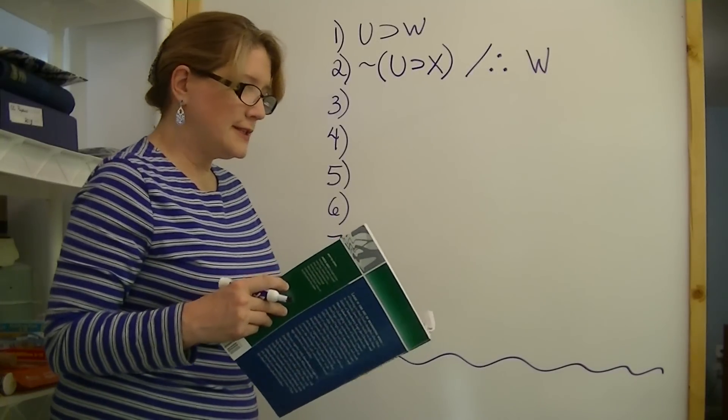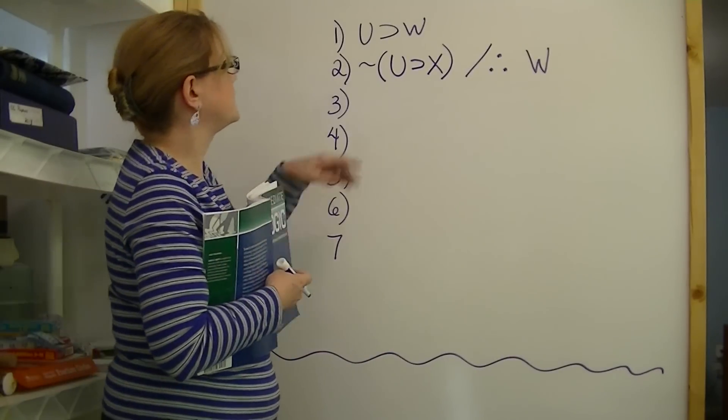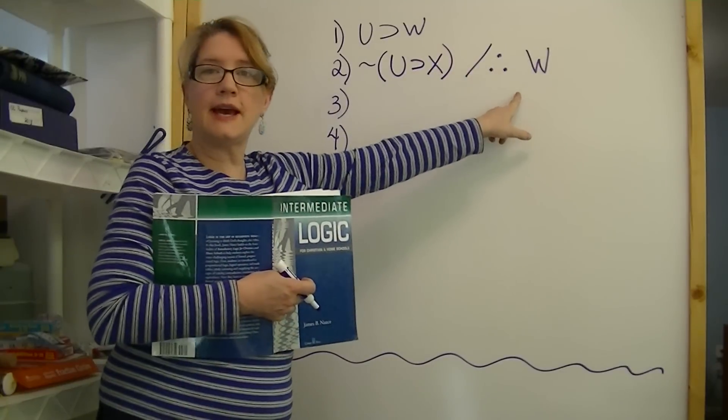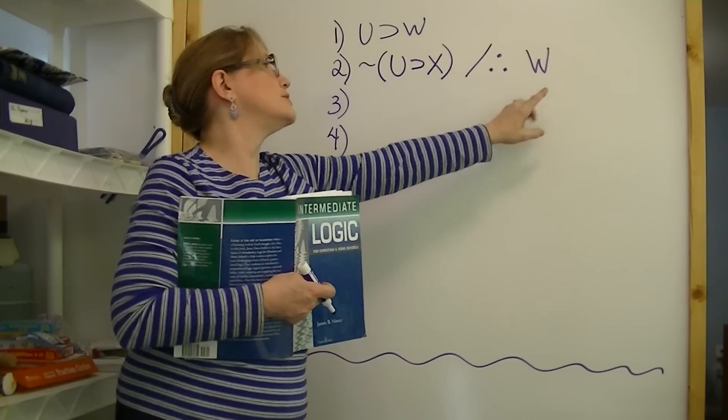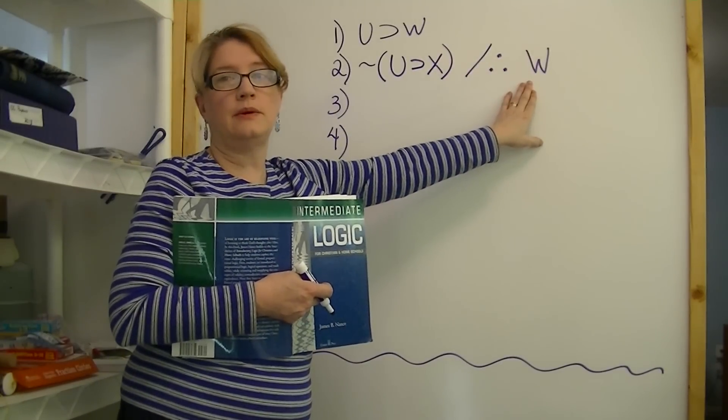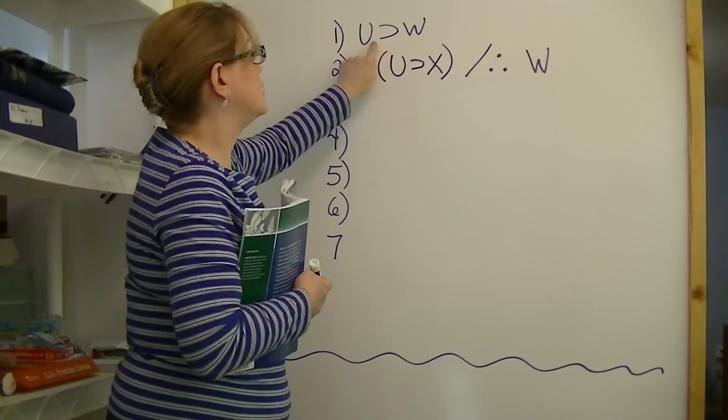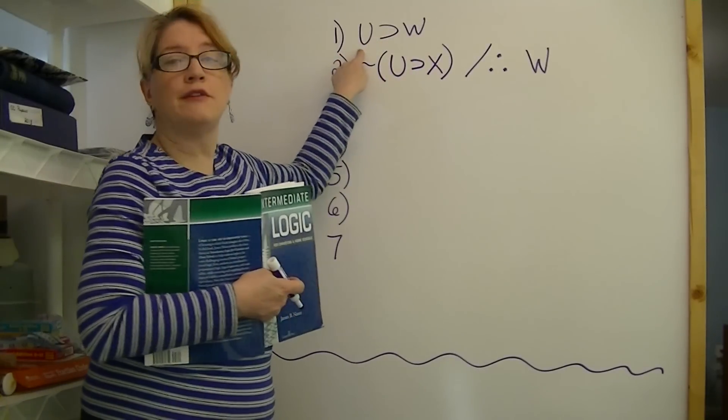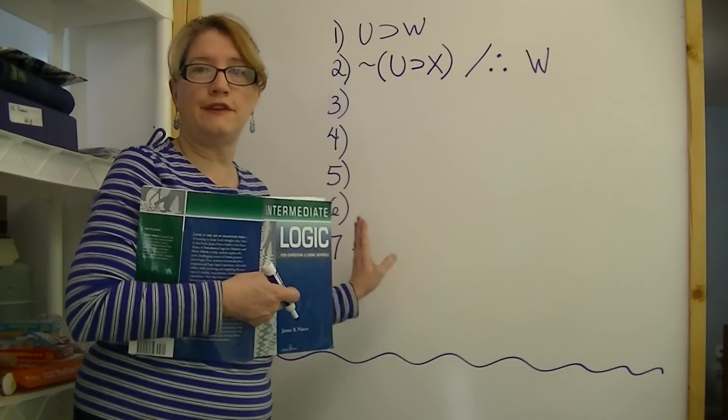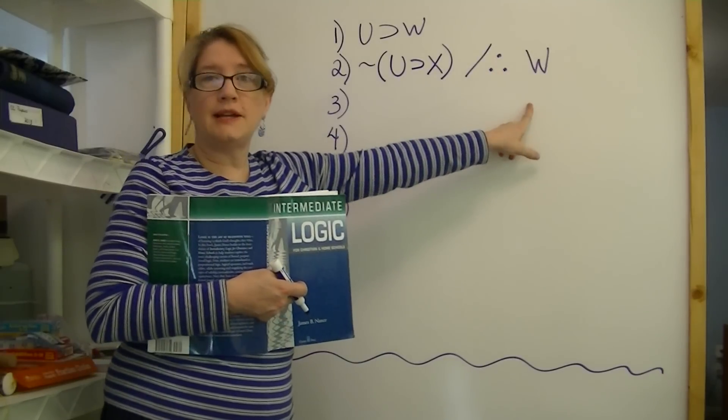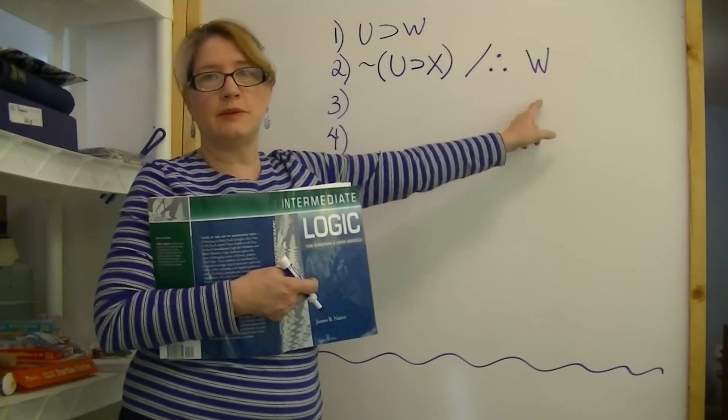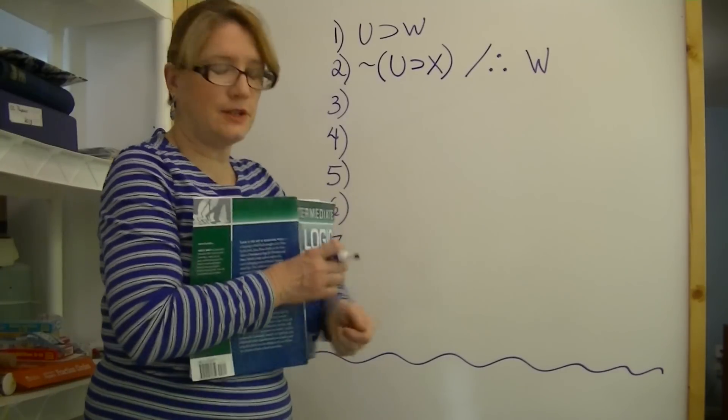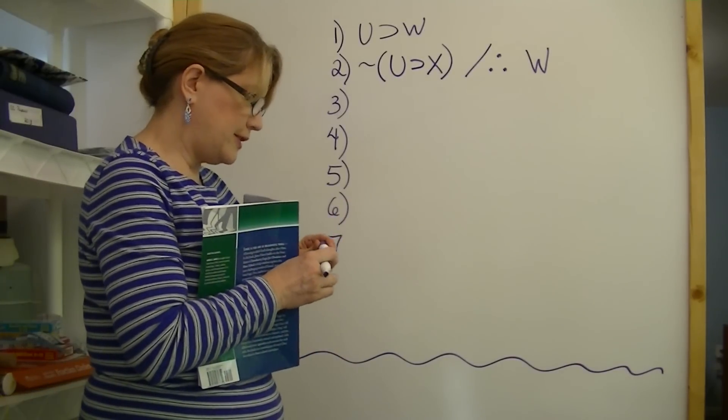Now the first thing that you should see here is in order to get this conclusion, in order to conclude W, we could use this. If U then W. Somehow if we get U by itself here, that will imply W. So there's a good possibility and the best way to do it, I believe, to prove it.